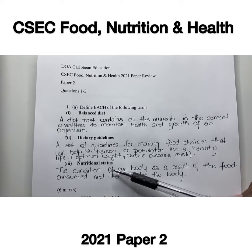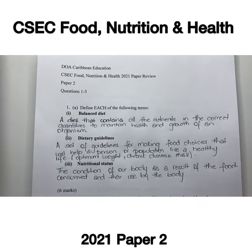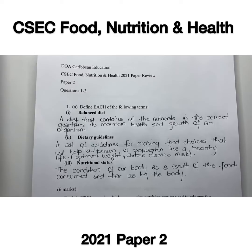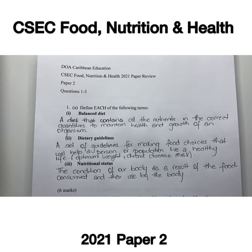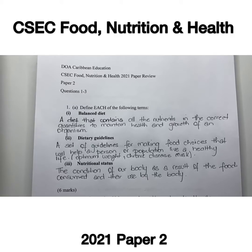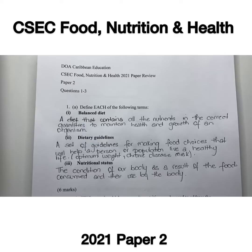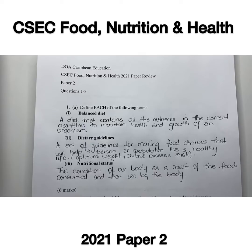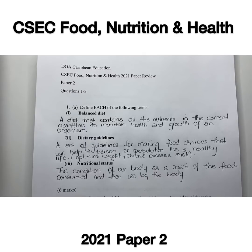Dietary guidelines are a set of guidelines stipulated by an entity — whether it's your ministry or government — for making food choices that will help a person or a population live a healthy life, including maintaining an optimum weight and reducing the risk for chronic diseases. Nutritional status is the condition of our body as a result of the foods consumed and their use by the body.